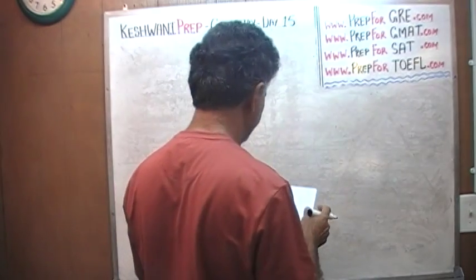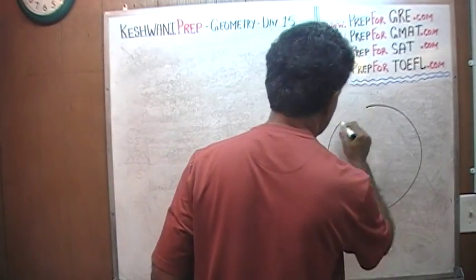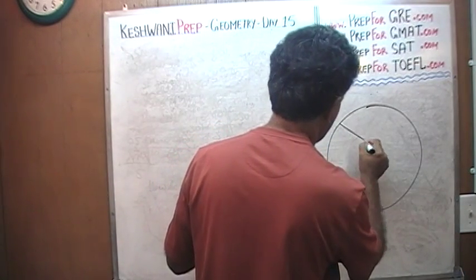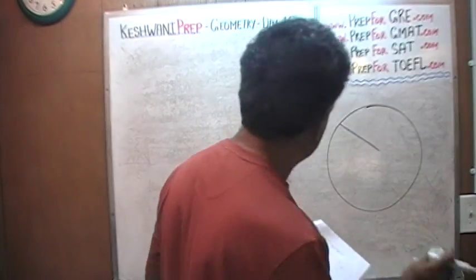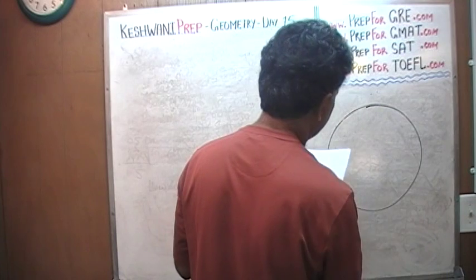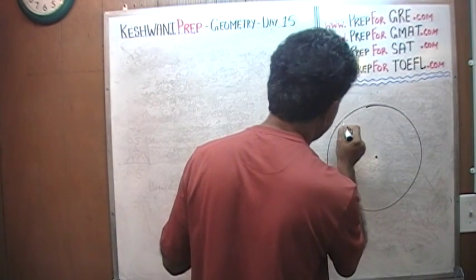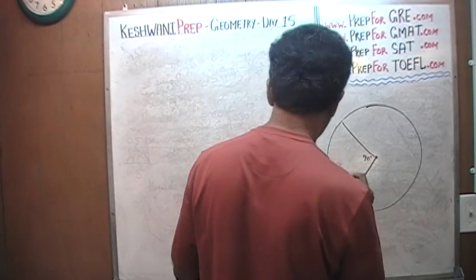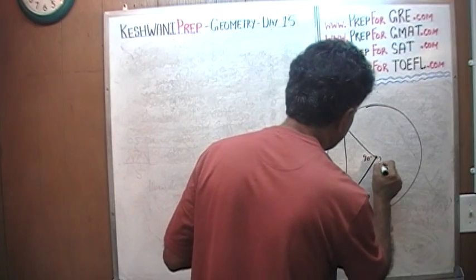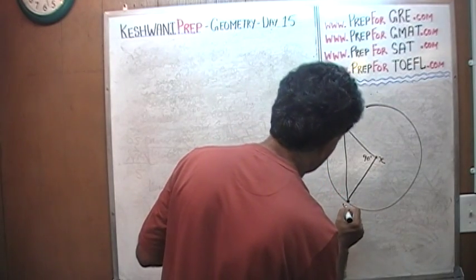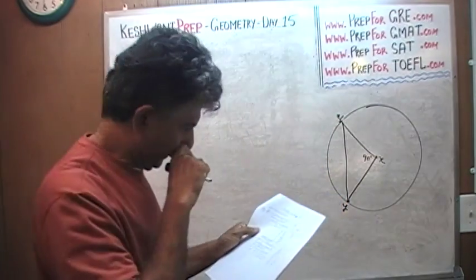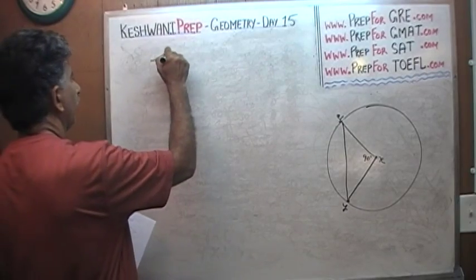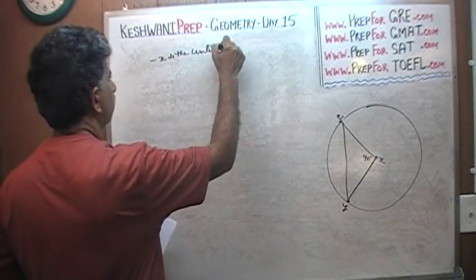Day number 15. Here's the problem for today. We are given a circle, and let's first locate the center. The center is here somewhere. We are told that this is 90 degrees. The center is called X, then we have Y and then we have Z. X is the center of the circle.